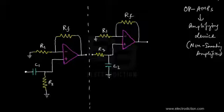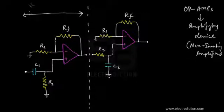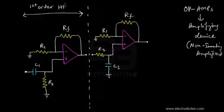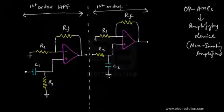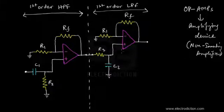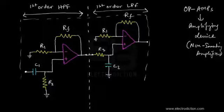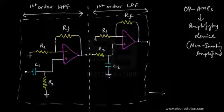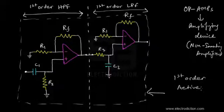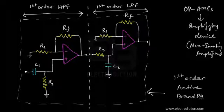Now we're going to add the passive filter stages to each of these non-inverting amplifiers. This part on the left is a first-order high pass filter, and the stage on the right is a first-order low pass filter. We now cascade them together and there we have it — our entire first-order active bandpass filter circuit.